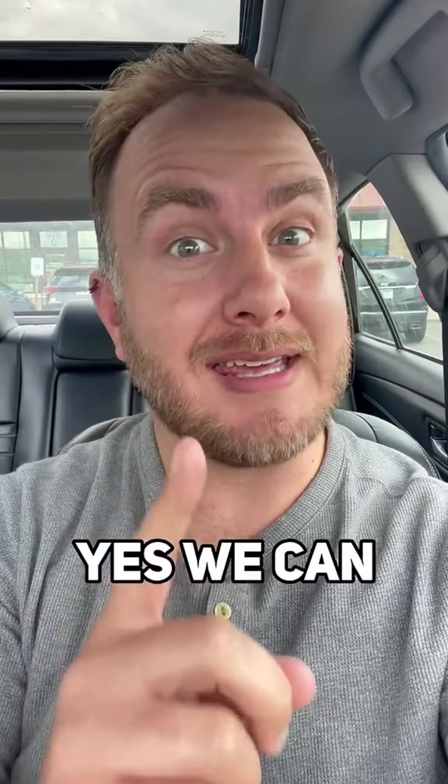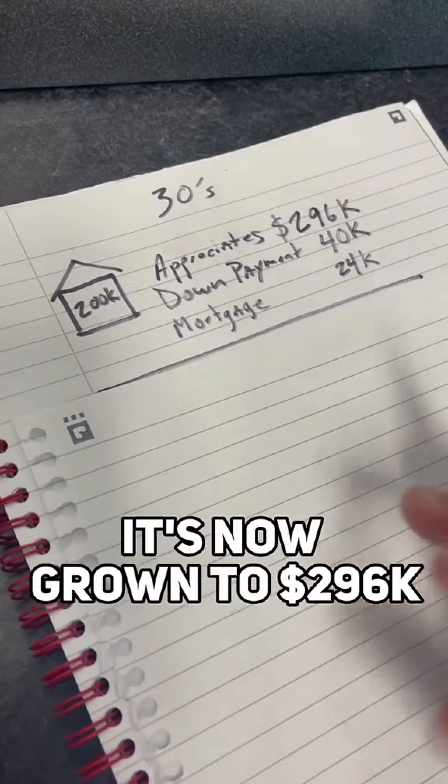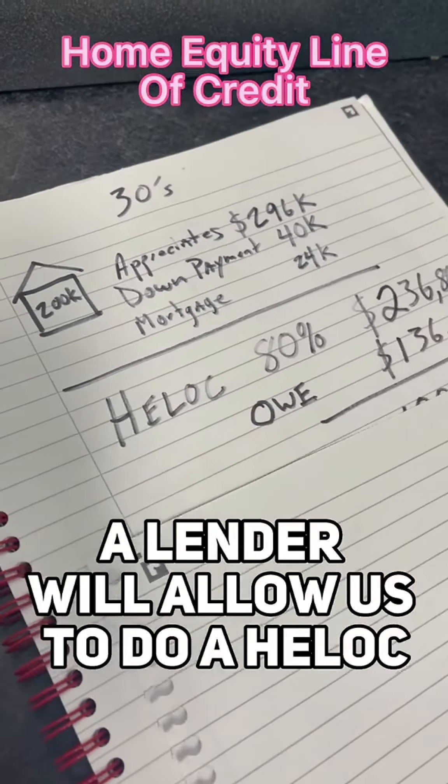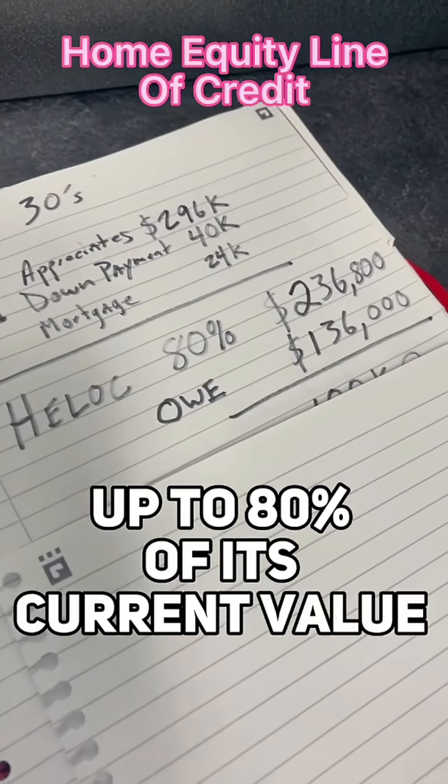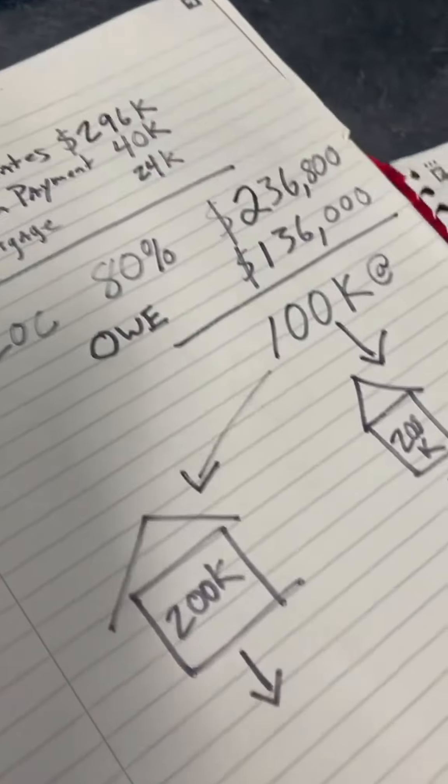Wait, yes, we can. Check this out. We take our original home for $200,000. It's now grown to $296,000. A lender will allow us to do a HELOC up to 80% of its current value, so $236,000. We still owe $136,000, which gives us $100,000 to work with.